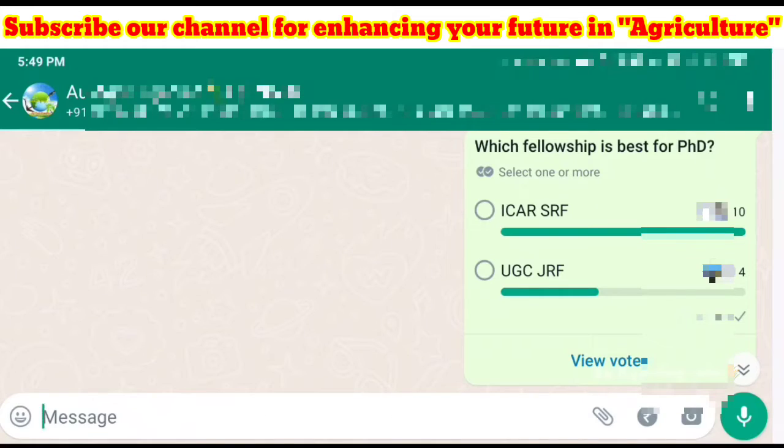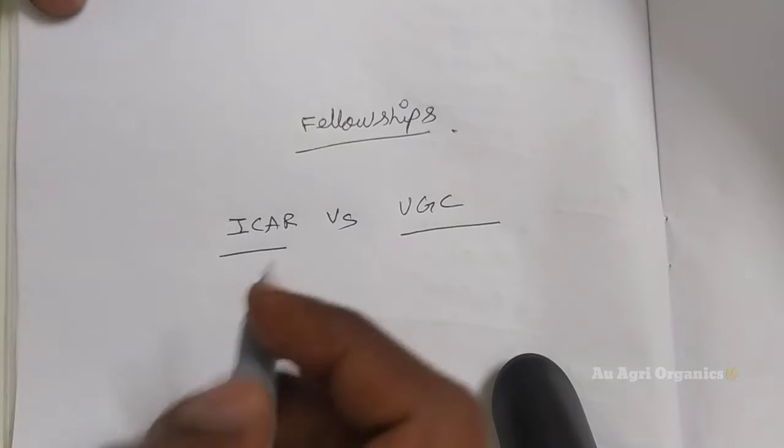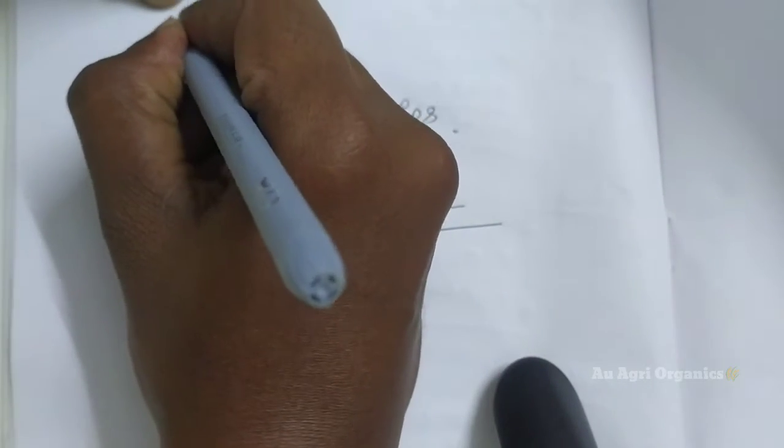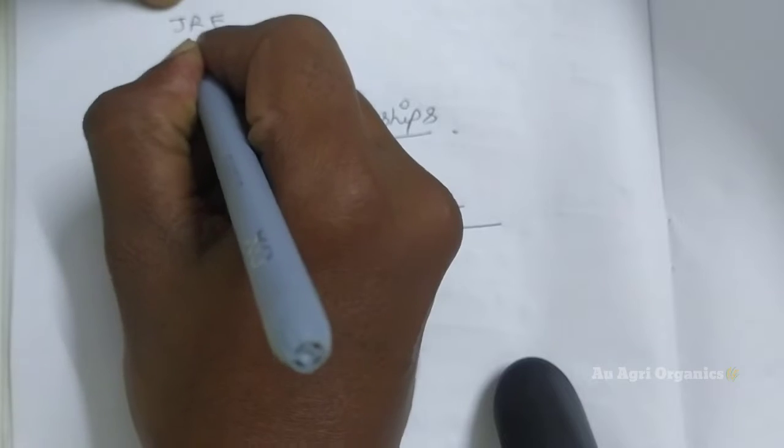As usual, we conducted a polling in our WhatsApp group: Which fellowship is best for PhD? I have given the options as ICAR-SRF and UGC-JRF. So most of the answers are ICAR-SRF. Only four members have voted for UGC-JRF. But in reality, somewhat ulta. Here we can see in detail about these fellowships. Before going deep into this video, first we should know what is meant by JRF, what is meant by SRF.